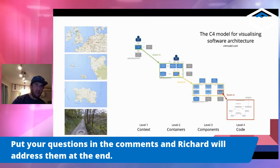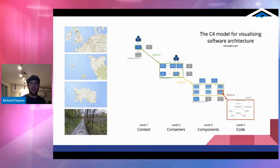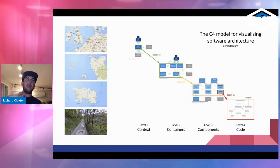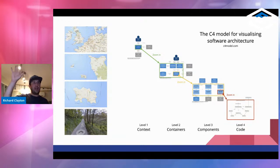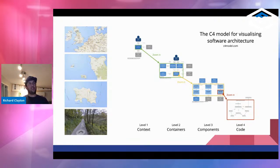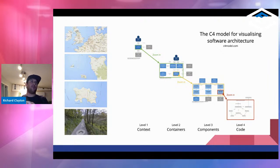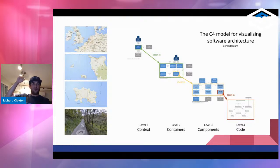The way Simon likes to talk about the C4 system is: imagine your architecture is Google Maps. You want to start at a really high level — imagine a map of Europe. That's your first level, showing where you are in the world. Then you drill down to a country level, showing something like the English Channel. That's your second level. Then he drills down to the Isle of Man, which happens to be where he's from. And finally you drill down to a bike path — that's your level four, which is code.